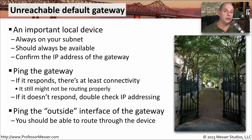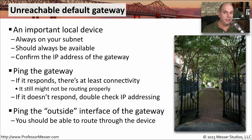If you want to confirm that your default gateway is routing properly, then it's useful to know the outside IP address of that gateway, and then you can ping the outside address as well. If you are able to ping the outside address, then everything should be working properly for that particular gateway. You're able to communicate to the inside interface, it is routing properly to the other side, and you're receiving a response from the outside IP address.